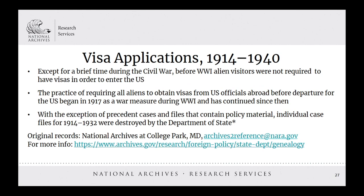Except for a brief period during the Civil War, before World War I alien visitors were not required to have visas to enter the U.S. The practice of requiring all aliens to obtain visas from U.S. officials abroad before departure began in 1917 as a war measure during World War I and has continued since then. NARA maintains visa applications created by the U.S. State Department for the years 1914 to 1940, but individual case files from 1914 to 1932 were destroyed by the Department of State, with the exception of precedent cases and policy material. NARA has a site specific to genealogical research using State Department records. If visa records are of interest, especially for immigrants entering the U.S. in the 1924 to 1944 timeframe, consider the U.S. Citizenship and Immigration Services Genealogy Program.